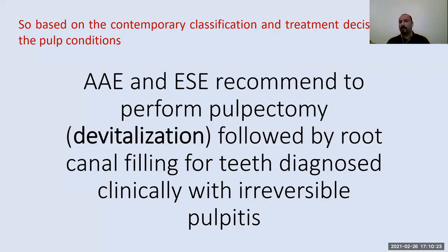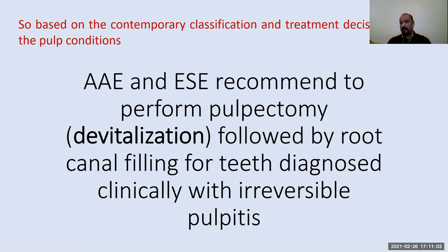These teeth exhibited normal vitality with cold testing and all were treated successfully with vital pulp therapy. Based on contemporary classification and treatment decisions, the two most familiar international associations — the American Association of Endodontists and the European Society of Endodontology — recommend pulpectomy (devitalization and removing of all the pulp), followed by root canal filling, for a tooth diagnosed clinically with irreversible pulpitis.